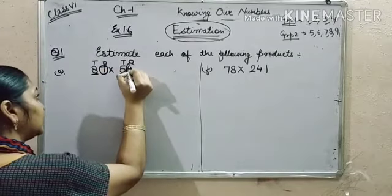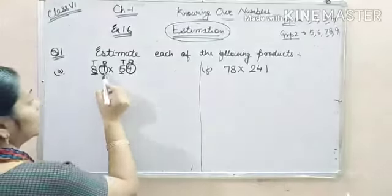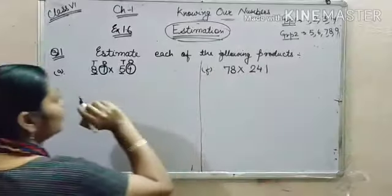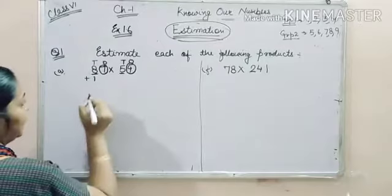For 87, we will check the 1's digit. Now 7 is at 1's place which belongs to group 2. That means we have to add 1 to the 10's place.